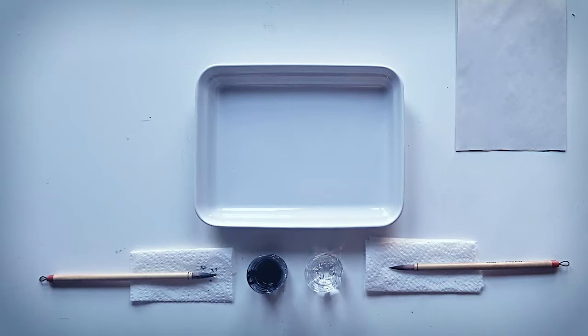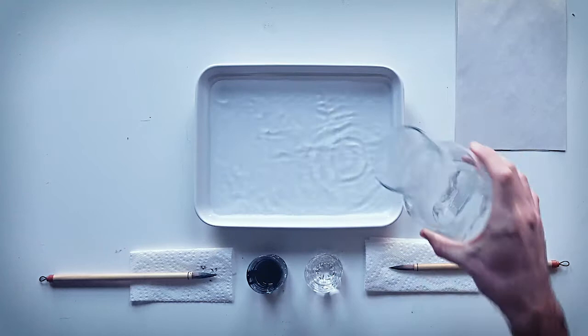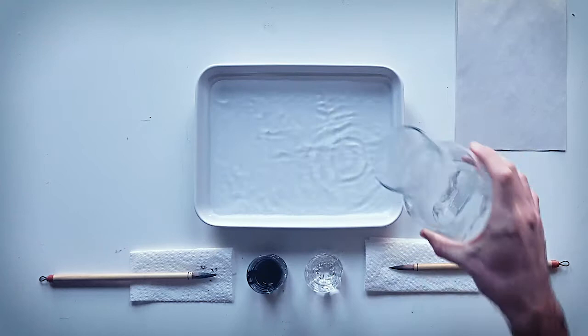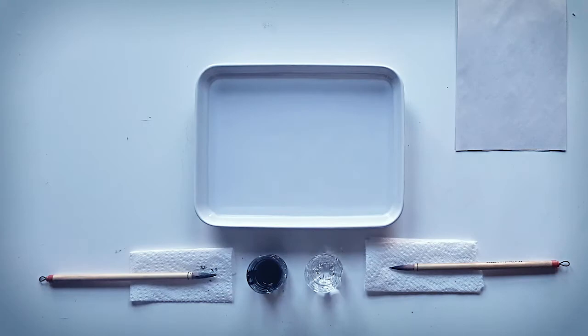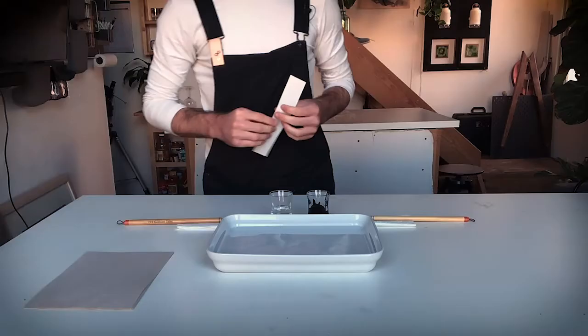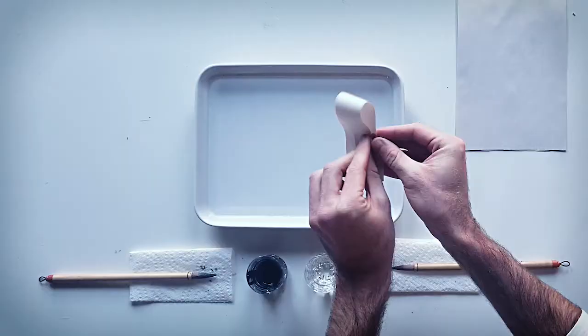Okay, now we're ready to begin. So pour some of your filtered water into your dish. About a fingernail deep is totally fine. Again, everything's happening on the surface of the water, so it doesn't really affect anything how deep this water is. And sometimes you want to just take a thin strip of paper and just sweep it across the surface to make sure that you're getting any sort of dust or anything off of there.